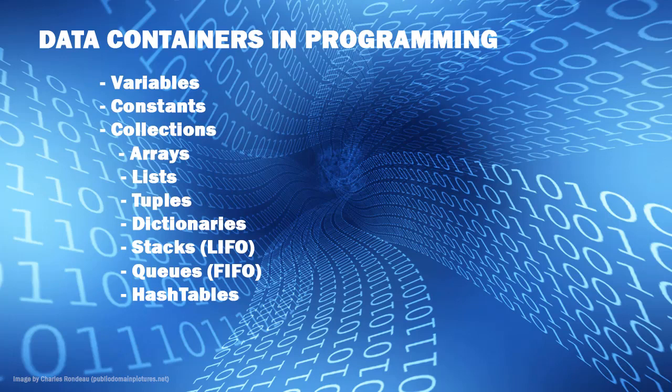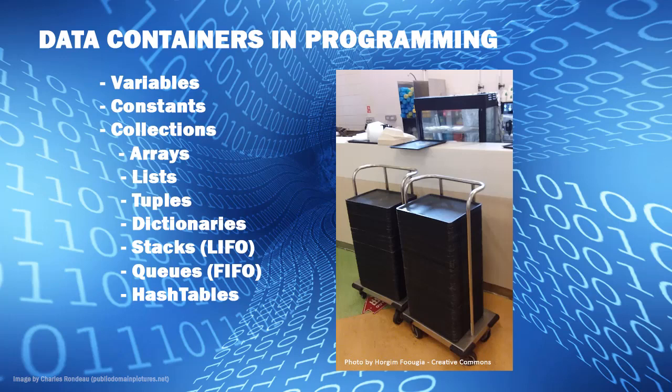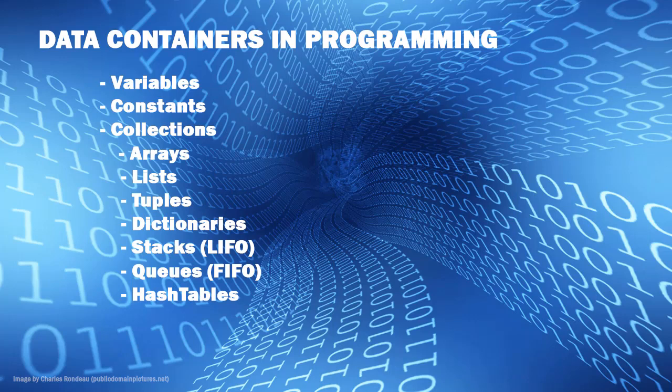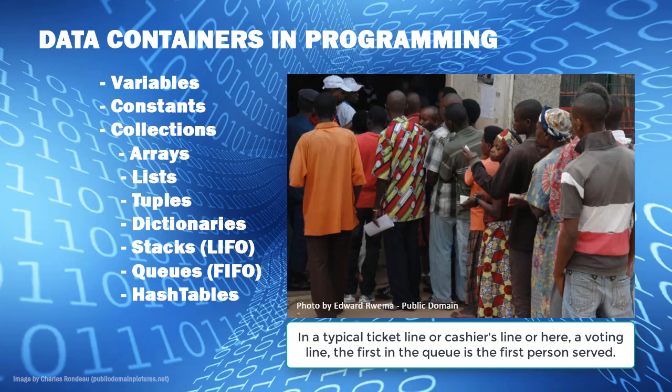Dictionaries allow us to pair a key and a value — just like in a regular dictionary we'd have a term and a definition. We have stacks and queues, which are lists. They differ in that stacks are last in first out — like a cafeteria tray, the last one put in is the first one taken off. Queues are the opposite: first in, first out. We refer to these as LIFO and FIFO. With a queue, whatever goes in first is the first one extracted from that list.